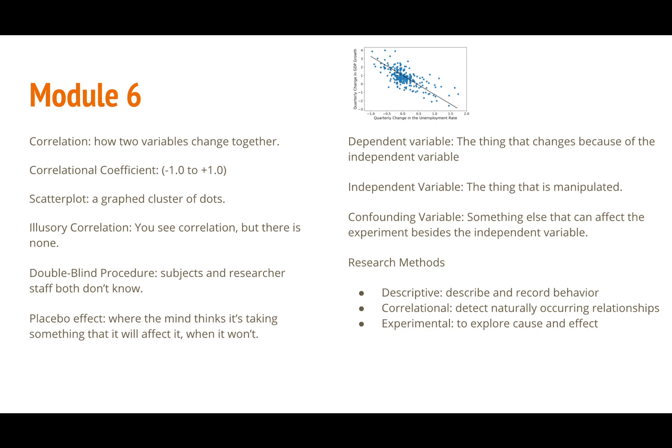There are a couple methods one could use in their research. We'll just focus on the three main ones. Descriptive or how you describe behavior, correlational or where you look for naturally occurring relationships, and experimental where you explore cause and effect.